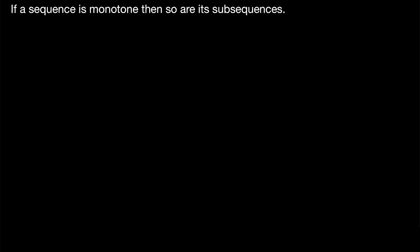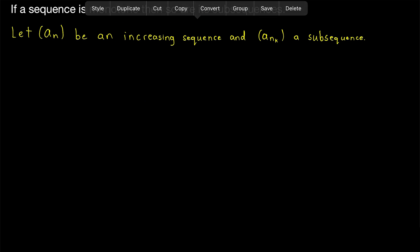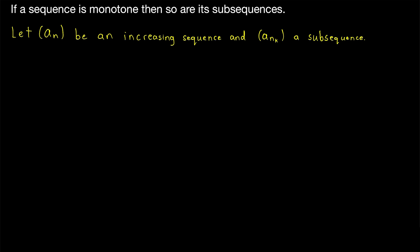Anyways, let's jump into the proof. We'll begin with increasing sequences and just very briefly go over decreasing sequences because, of course, the proofs are practically identical. So we'll say let an be an increasing sequence and ank an arbitrary subsequence. By definition of an being increasing, this means any term an is less than or equal to the next term, an plus one. That is the definition.